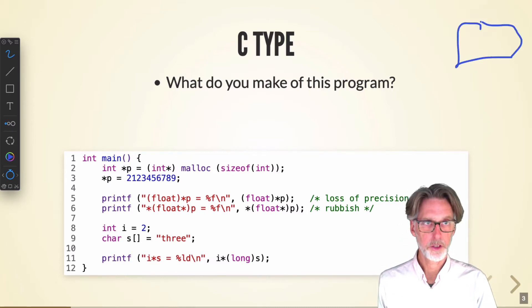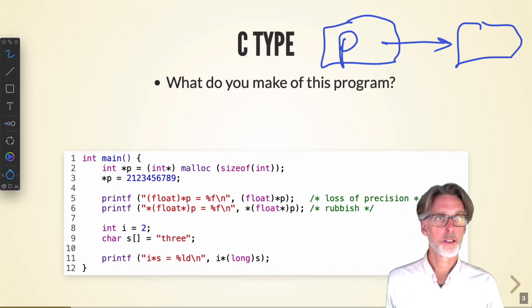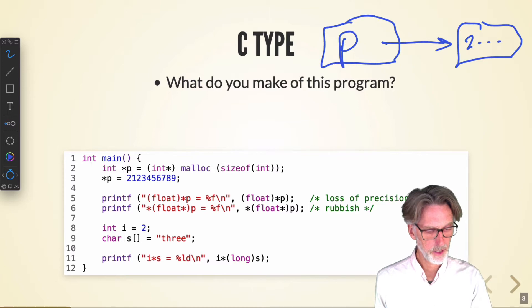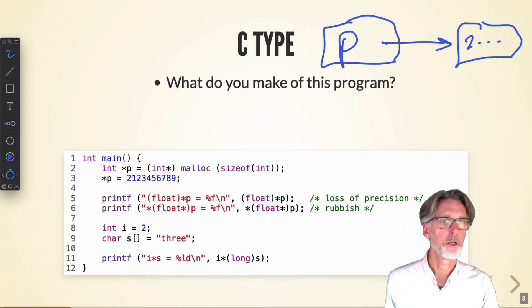So here's our object on the heap. We have the pointer, P, which is on our stack. And that's referencing this element of memory. And you can see we're putting in the number about two billion.